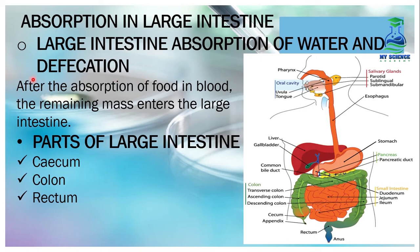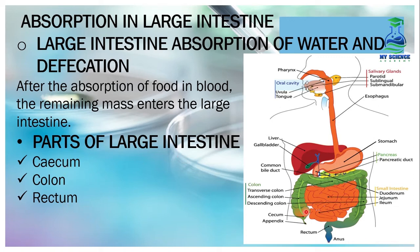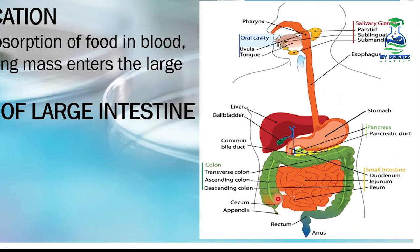After the absorption of food in the small intestine, the remaining mass enters the large intestine. The large intestine has three main parts: the cecum, the colon, and the rectum. In this diagram, we can observe these three parts.